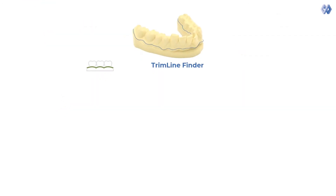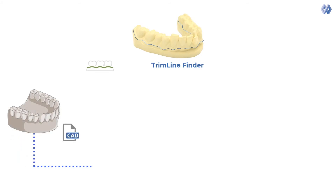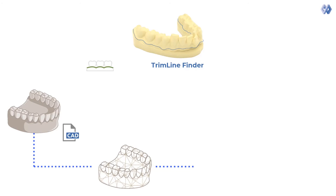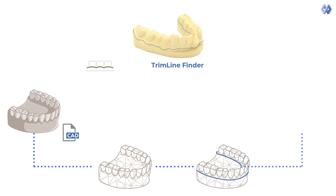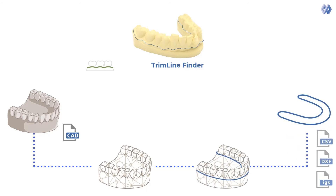Clear Aligner Trimline Finder imports the patient model and automatically identifies the optimal trimming line, with optional user defined input. It then exports the data in various data formats.